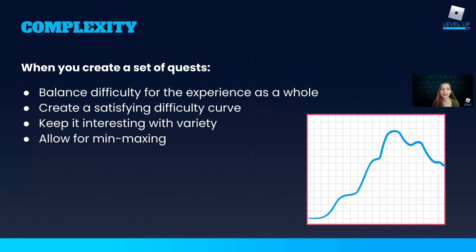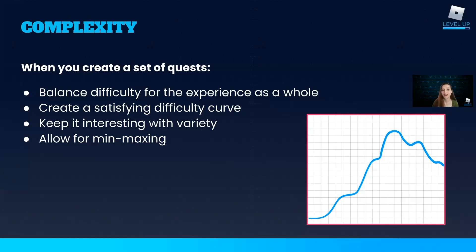Keep it interesting with variety — give players lots of different kinds of tasks so they don't feel like they're doing the same thing repeatedly. Allow for min-maxing when possible: players can strategize to make progress on multiple tasks at once. For example, if one quest asks to plant 10 seeds of any kind and another to harvest 20 wheat, I can plant 10 wheat seeds — completing the first and setting up the second. You can also design one quest to set players up for success in the next, like gathering ingredients in one quest and using them to bake a cake in the next.